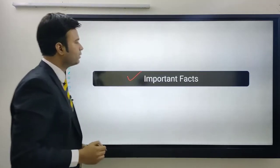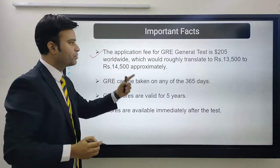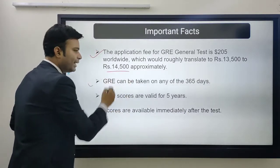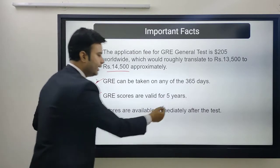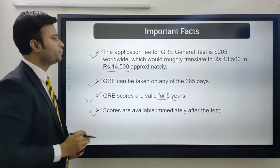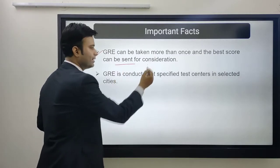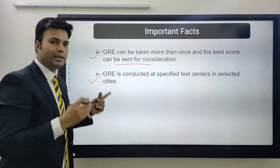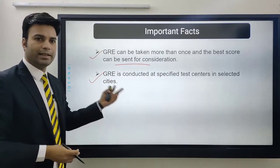Now for some important facts: the application fee for the GRE general test is $205 worldwide, which roughly translates to approximately 30,500 to 14,500 in local currency. GRE can be taken on any of the 365 days, meaning it is available every day. GRE scores are valid for 5 years and are available immediately after the test. GRE can be taken more than once and the best score can be sent for consideration. GRE is conducted at specified test centers in selected cities.